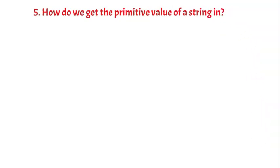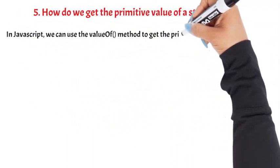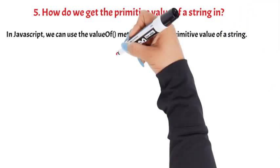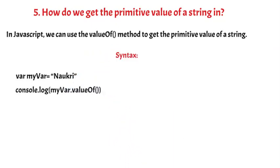How do we get the primitive value of a string in JavaScript? We can use the valueOf() method to get the primitive value of a string. Syntax: var myVar = 'Waikyu Academy'; console.log(myVar.valueOf()); Question 6.